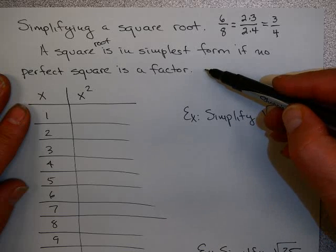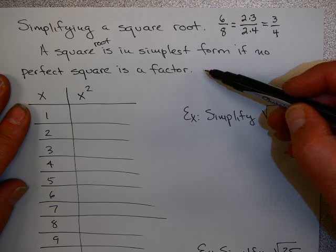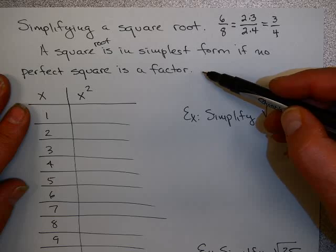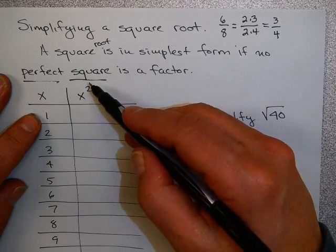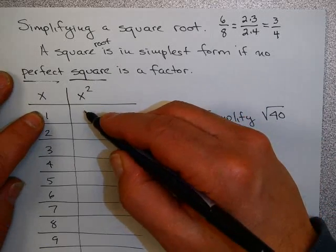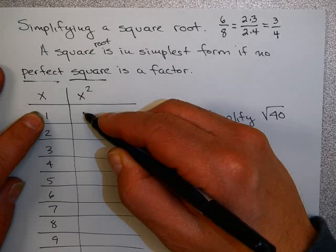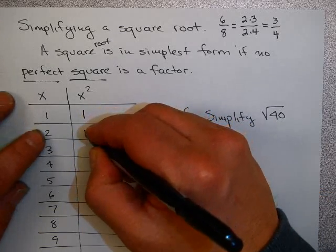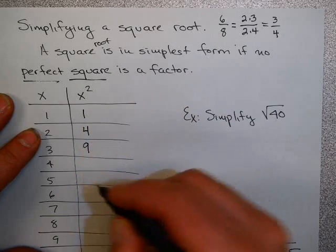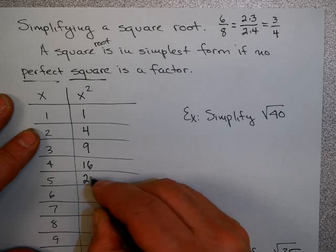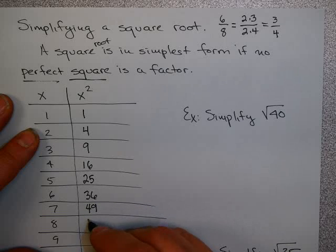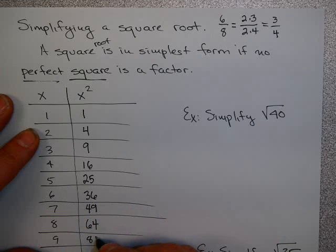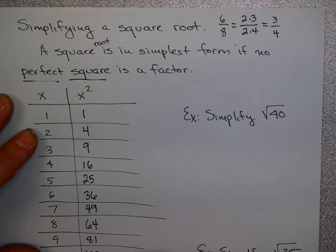The first rule towards simplifying square roots is this. A square root is in simplest form if no perfect square is a factor. Now what the heck is a perfect square? That is a number that is the square of some existing positive number. For example, let's make a list of the perfect squares. 1 times 1 is 1. 2 times 2 is 4. 3 times 3 is 9. 4 times 4 is 16. 5 times 5 is 25. 6 times 6 is 36. 7 times 7 is 49. 8 times 8 is 64. 9 times 9 is 81. 10 times 10 is 100. 11 times 11 is 121. And 12 times 12 is 144.